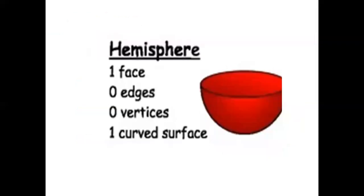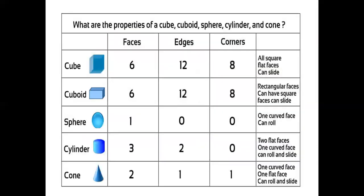Next, hemisphere. Hemisphere is half of a sphere. It has 1 face, no vertex. Let us revise what we learned.